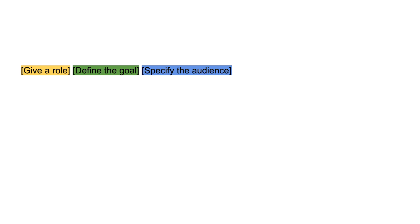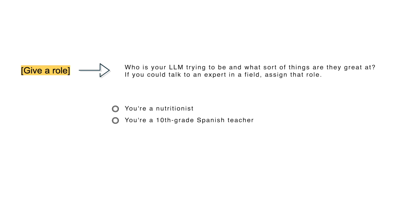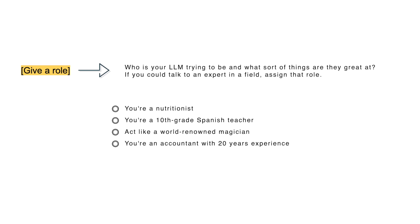This 5-part prompt formula is going to change the way you prompt your LLM. Here's how it breaks down: first, you're going to give a role; then define a goal; specify the audience; set restrictions, style, or tone; and format the result. Giving a role to your LLM is not a necessity, but it is a nice-to-have. Think: who is your LLM trying to be? If you could talk to an expert in any field, assign that role — things like 'you're a nutritionist,' 'you're a 10th grade Spanish teacher,' 'act like a world-renowned magician,' or 'you're an accountant with 20 years of experience.'